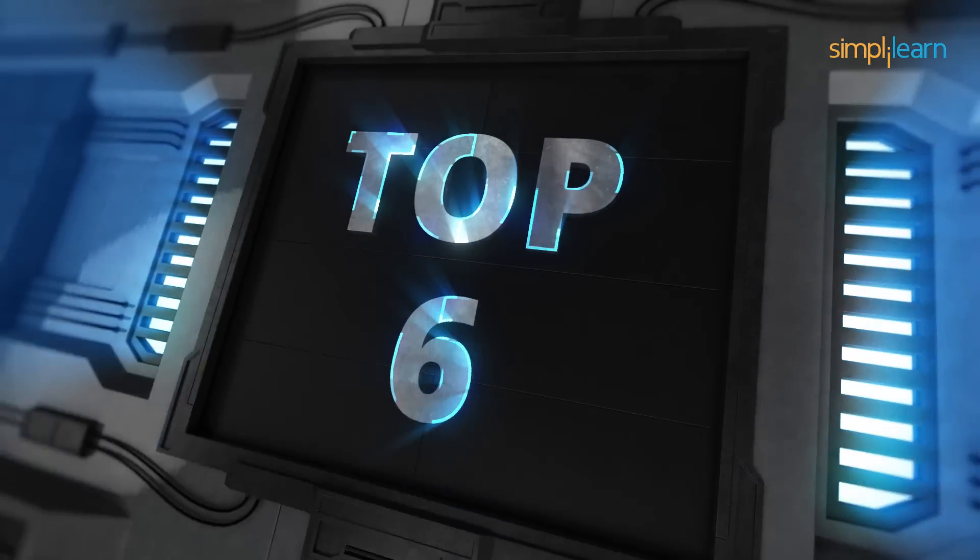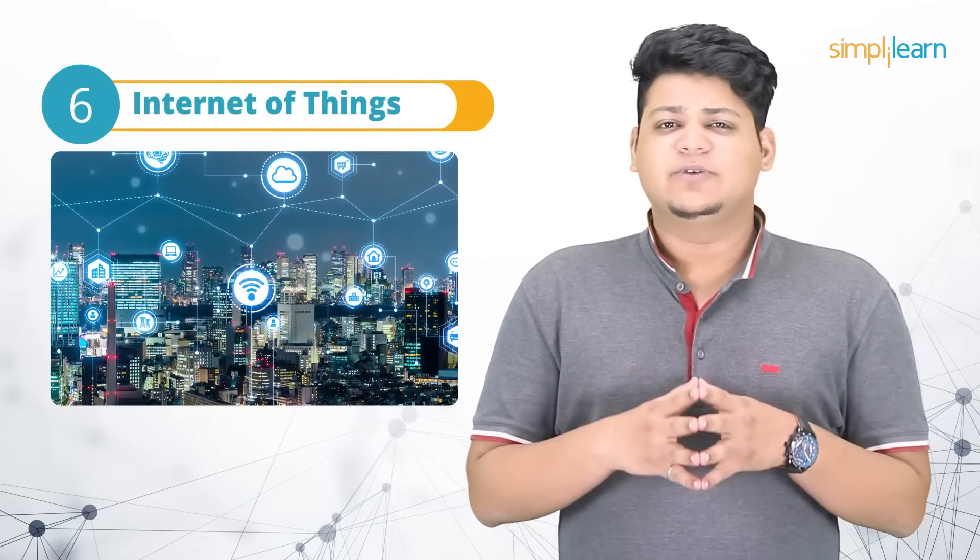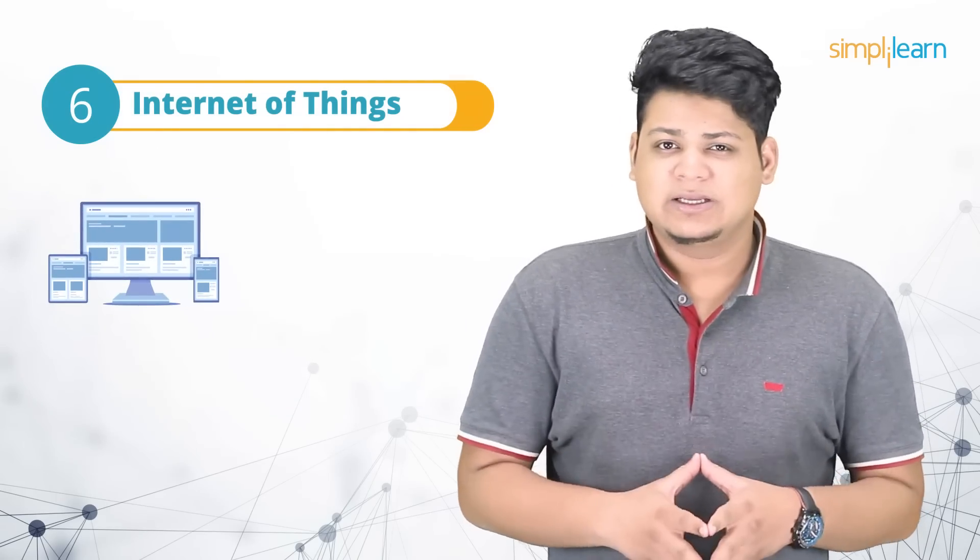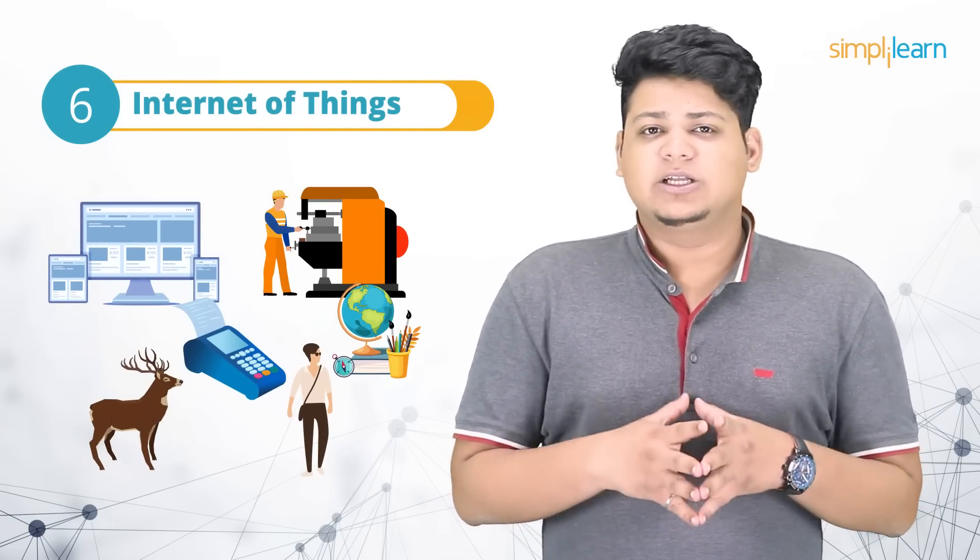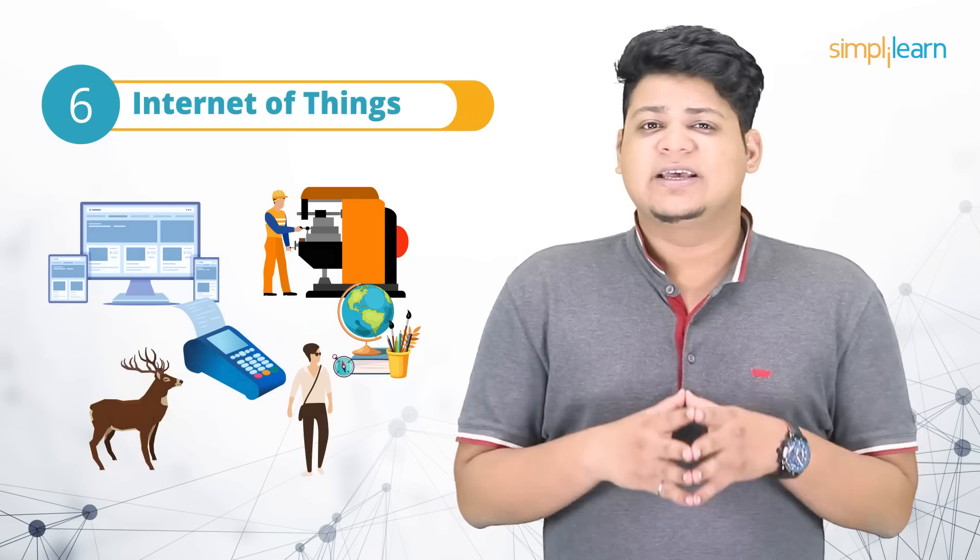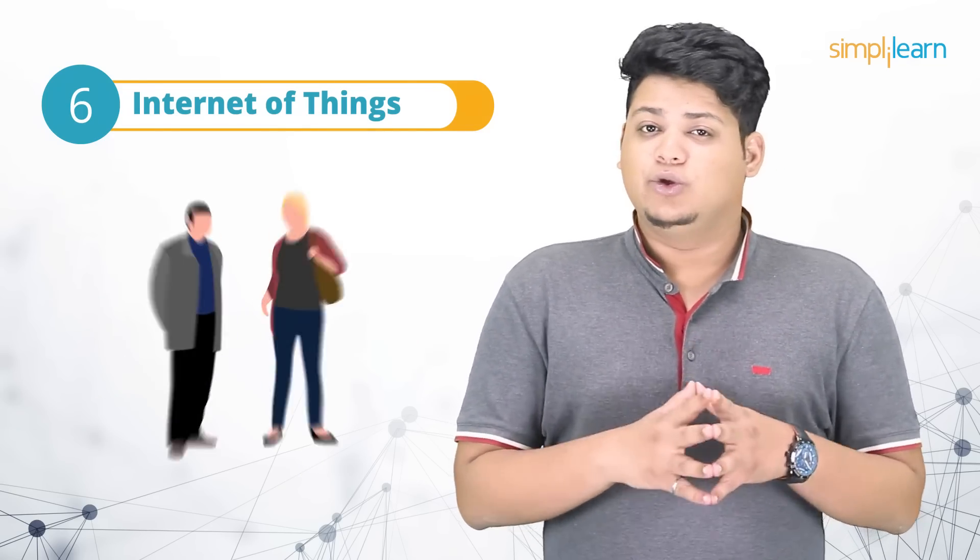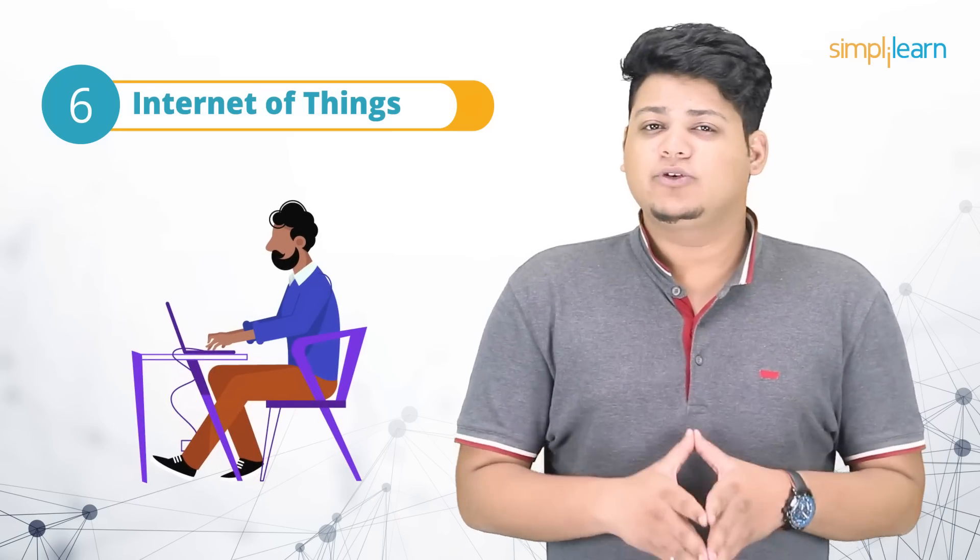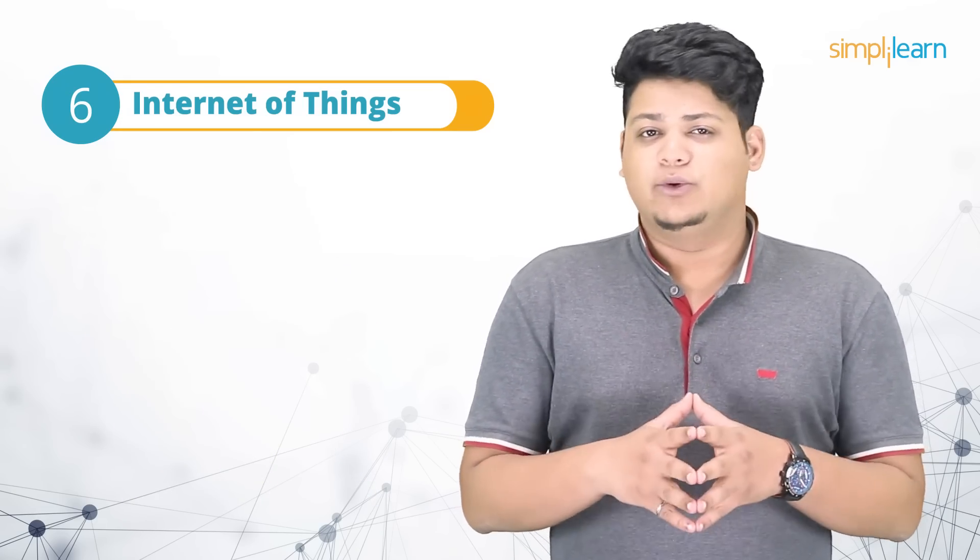At number 6, we have IoT or the Internet of Things. IoT is a system of interrelated computing devices, mechanical and digital machines, objects, animals or people that are provided with unique identifiers, and the ability to transfer data over a network without requiring human-to-human or human-to-computer interaction. We will talk about a few technological developments in the field of IoT now.